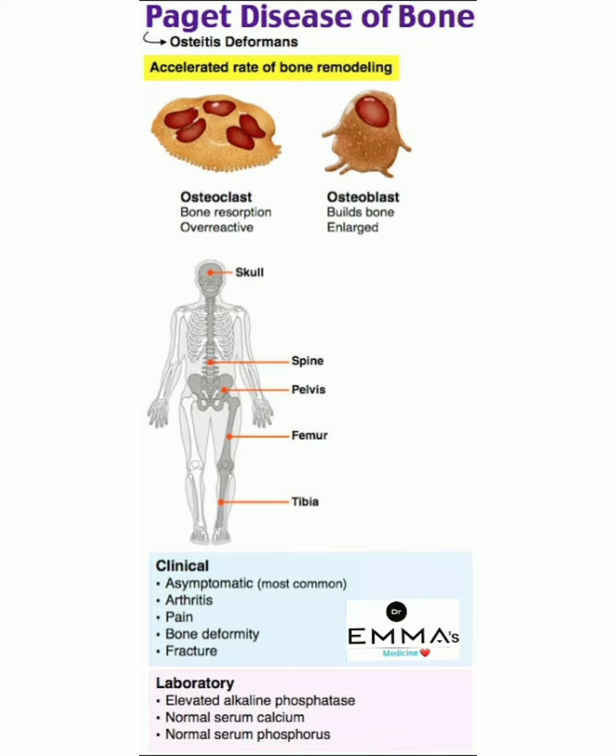Regarding laboratory findings of Paget's disease of bone: there is elevated alkaline phosphatase — remember, only alkaline phosphatase is elevated — while serum calcium and serum phosphorus are both normal.